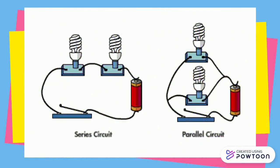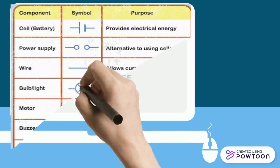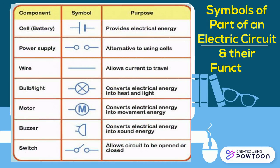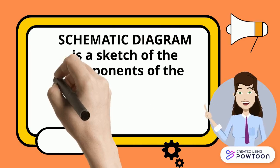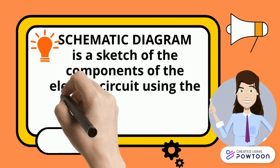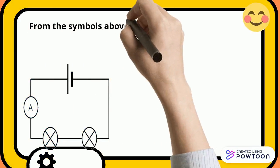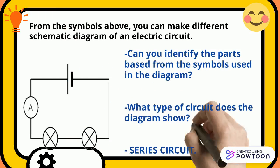A series circuit and a parallel circuit are the two types of electric circuits. These are the symbols of parts of an electric circuit and their functions. A schematic diagram is a sketch of the components of the electric circuit using standard electrical symbols. From these symbols, you can make different schematic diagrams of an electric circuit.